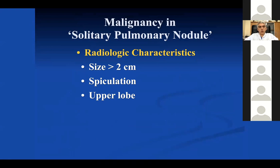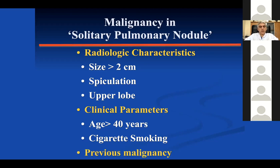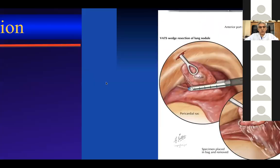There is a term called solitary pulmonary nodule. When we come across a nodule, we look at radiological characteristics: size, spiculation, and location. If larger than 2 cm, spiculated, or in the upper lobe, the likelihood of malignancy is higher. Age and cigarette smoking are also important. We evaluate the patient and if these parameters are positive, we do transthoracic needle aspiration. Previous malignancy is an important parameter. If transthoracic needle aspiration is not possible or inconclusive, we do wedge resection and send it to frozen section.